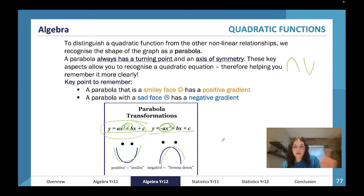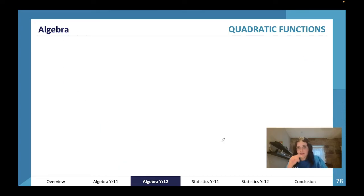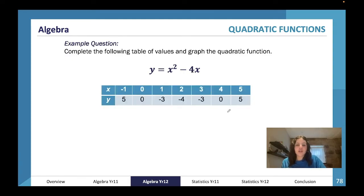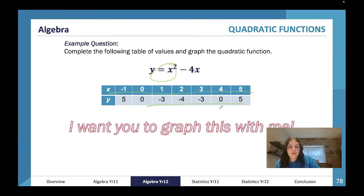Example question: complete the following table of values and graph the quadratic function y = x² - 4x. We're going to insert some x values to find some example y values. We usually just use a range around negative 5 to 5, something around that easy small number range. Because it's positive, I'm just going to stick to mostly positive numbers because it will go in the inverse.